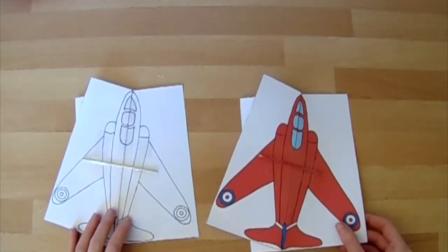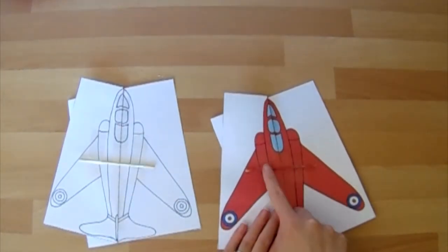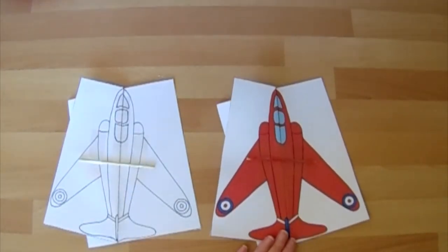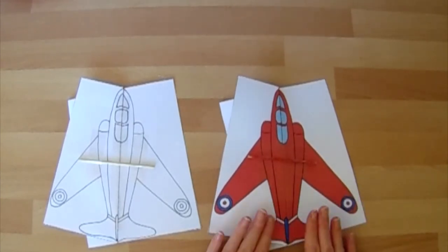I'm just going to use some sellotape to keep our wooden skewer in place. Now on my colored version of this kite I actually colored my wooden skewer in red before I stuck it down, so that it wasn't as obvious on top of my red arrow.